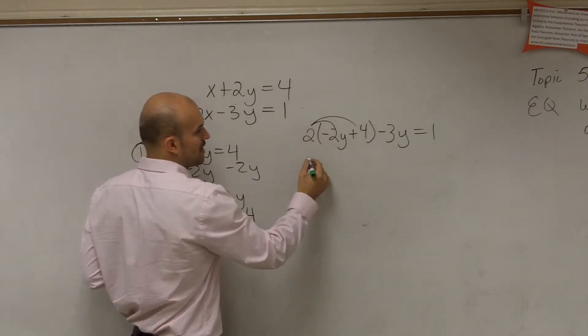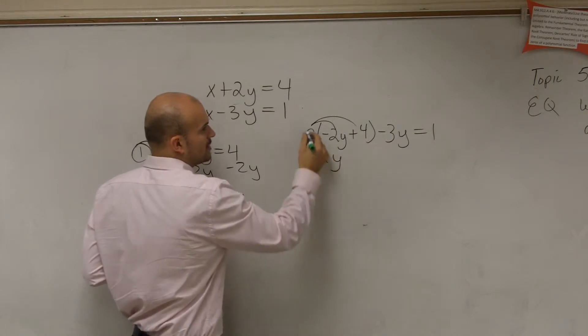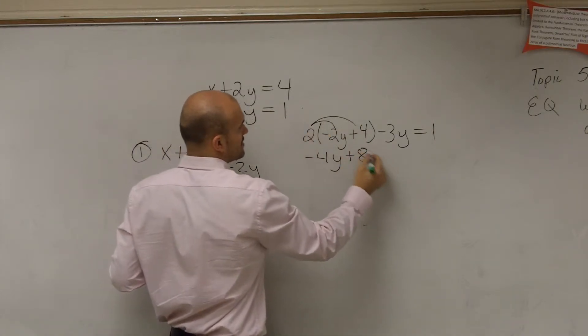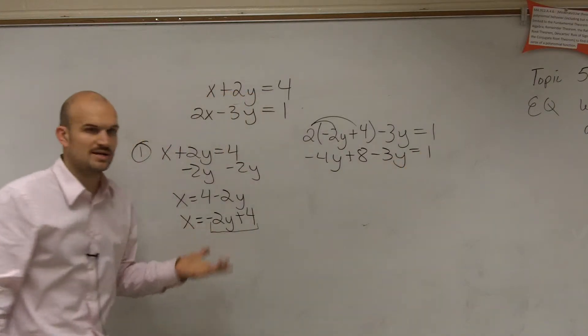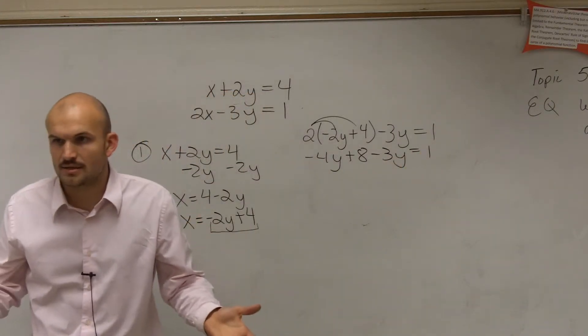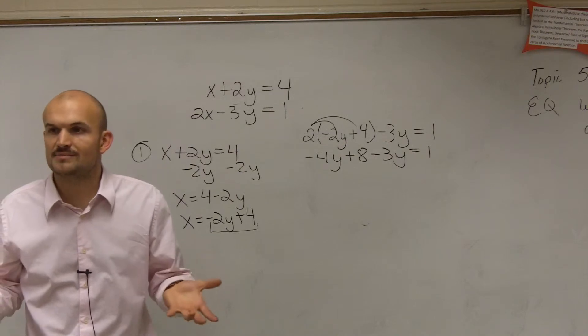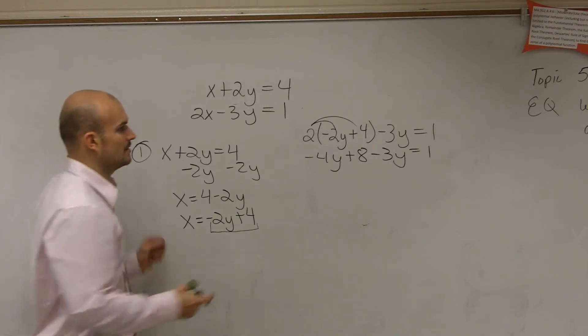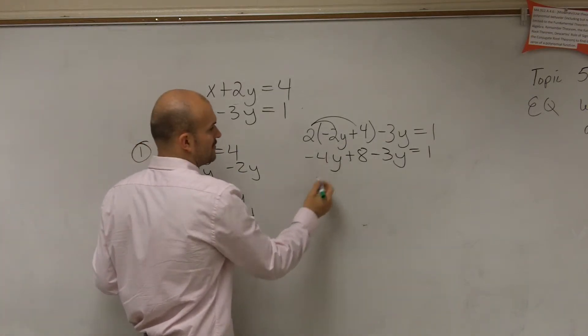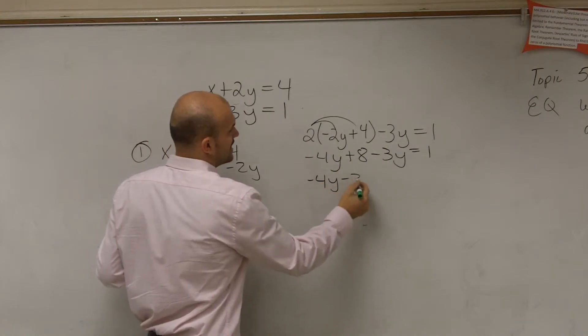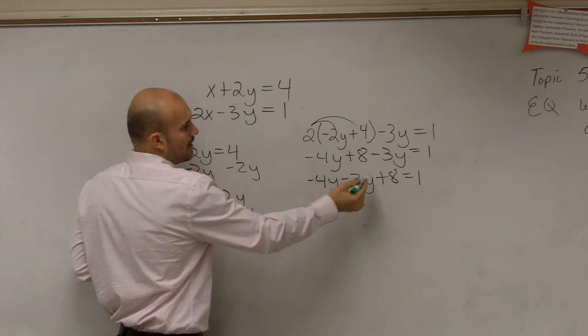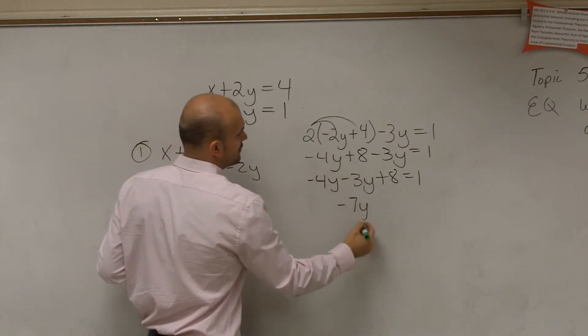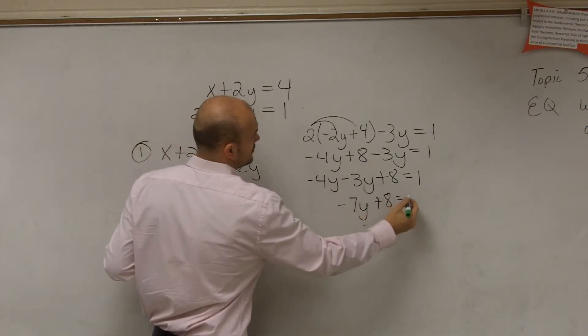So 2 times negative 2y is negative 4y. 2 times 4 is positive 8 minus 3y equals 1. Now in solving equations like this, we have two y's. So the only way to get them together is to combine them. So we rewrite this: negative 4y minus 3y plus 8 equals 1. Negative 4y minus 3y is negative 7y plus 8 equals 1.